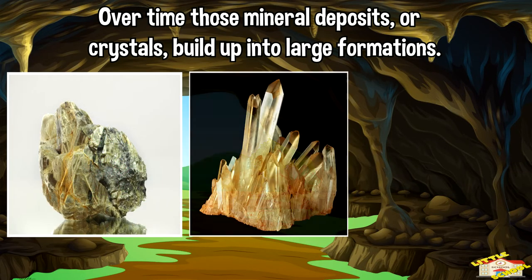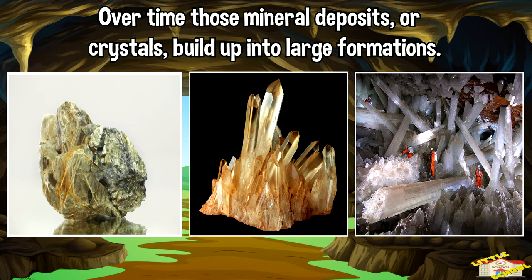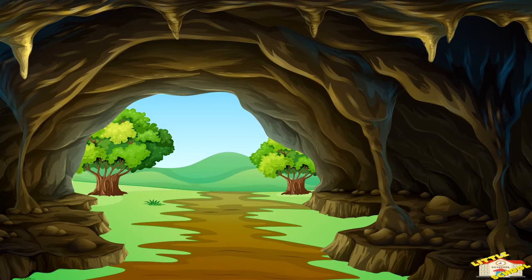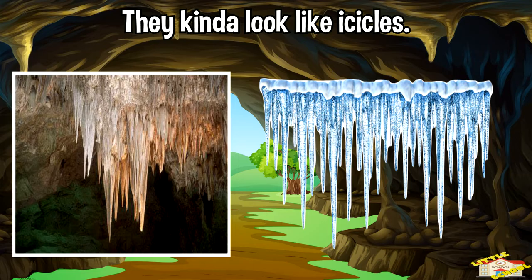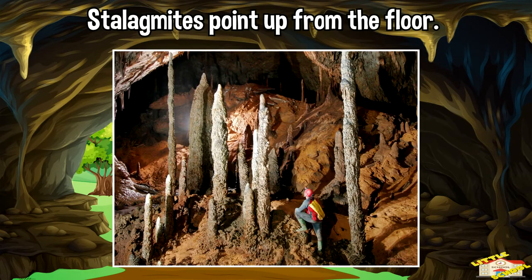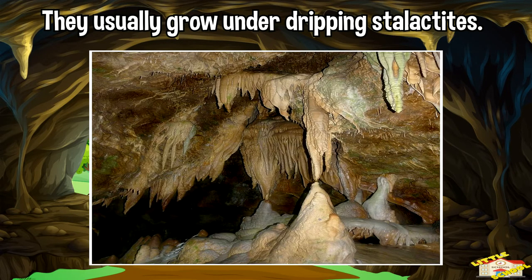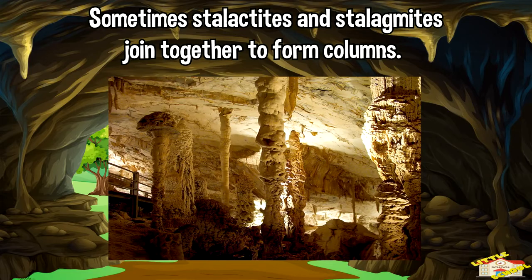Over time, those mineral deposits or crystals build up into large formations. Those that hang down from the ceiling are called stalactites — they kind of look like icicles. Stalagmites point up from the floor. They usually grow under dripping stalactites. Sometimes stalactites and stalagmites join together to form columns.